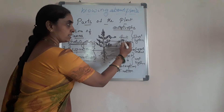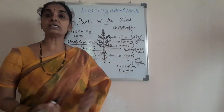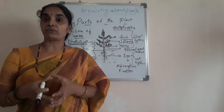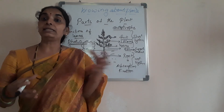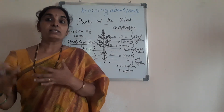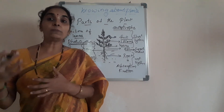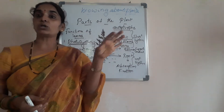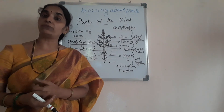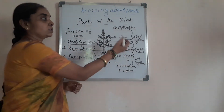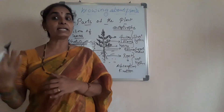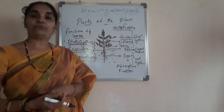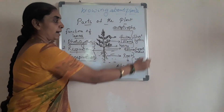Coming to the flowers — different plants have different flowers of different colors. The role of the flower is to attract insects for pollination, which helps in the reproduction of the plants. The flower contains sepals and petals of different colors which attract insects, responsible for pollination and further reproduction. Flowers normally develop into fruits, and the fruits contain seeds in them.